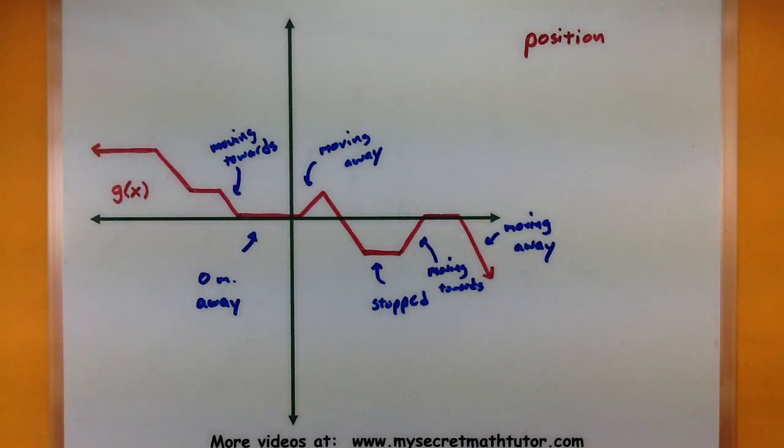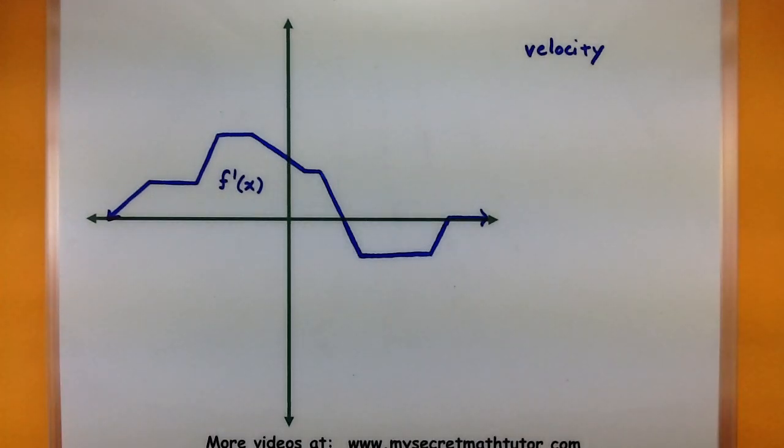So a more interesting case is actually to look at the velocity and see what it tells us about the position of a function. Now I'm going to use a completely different velocity that's unrelated to this graph, just so we can pick that one apart.